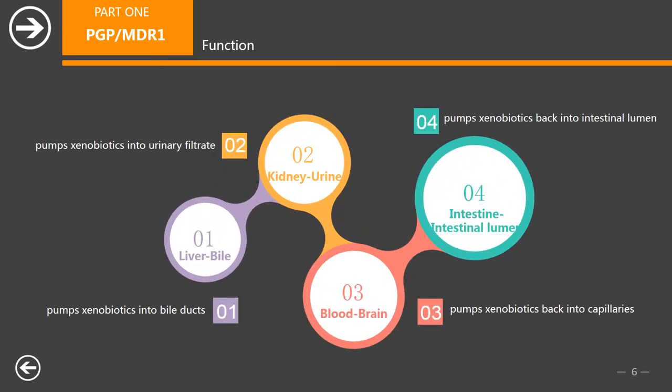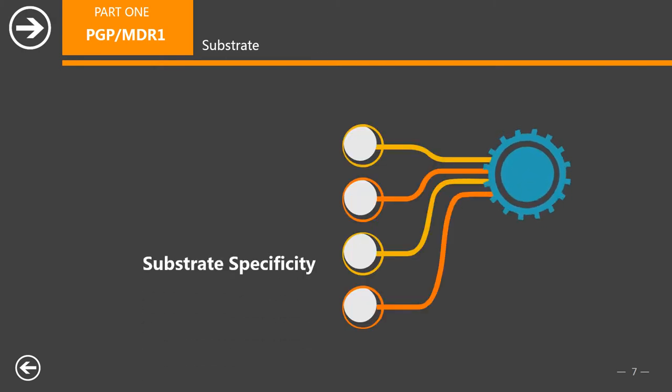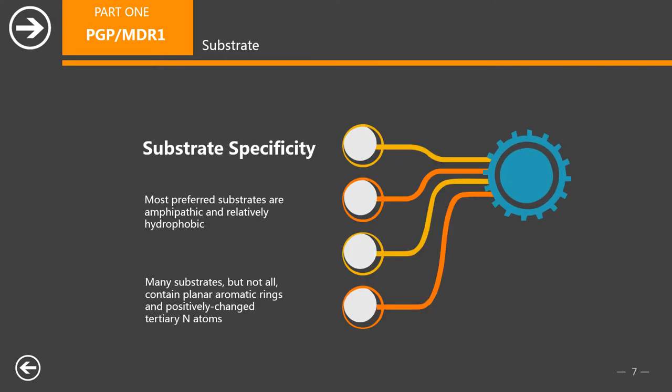PGP is extensively distributed and expressed in the intestinal epithelium where it pumps xenobiotics such as toxins or drugs back into the intestinal lumen, in liver cells where it pumps them into bile ducts, in the cells of the proximal tubule of the kidney where it pumps them into urinary filtrate, and in the capillary endothelial cells composing the blood-brain barrier and blood-testis barrier, where it pumps them back into the capillaries. Most preferred substrates are amphipathic and relatively hydrophobic. Many substrates, but not all, contain planar aromatic rings and positively charged tertiary N atoms.